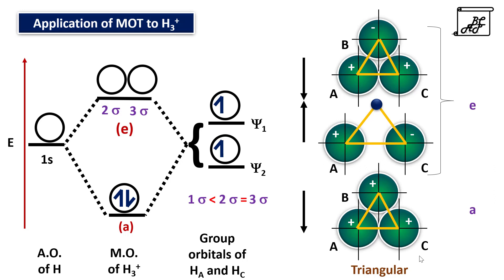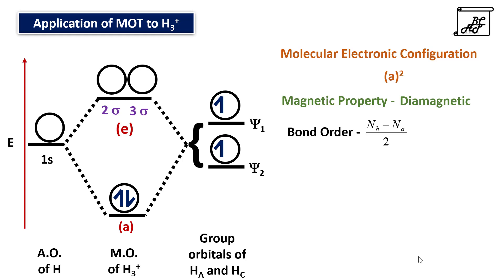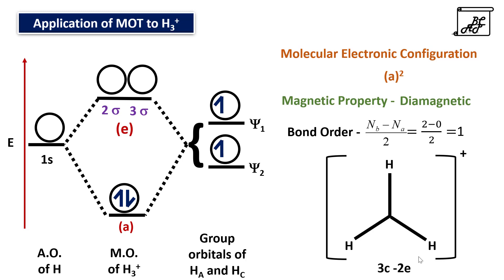Both electrons get occupied in the bonding molecular orbital, same as in linear arrangement. In linear arrangement there are three molecular orbitals: one bonding, one non-bonding, and one anti-bonding. Whereas in triangular arrangement, there is one bonding molecular orbital and two net anti-bonding orbitals. According to molecular orbital theory, the molecular electronic configuration is A squared as both electrons are in the bonding molecular orbital. Magnetic behavior is diamagnetic as there is no unpaired electron, and bond order is calculated as (bonding electrons minus anti-bonding electrons) divided by 2, which equals 1. Thus, according to molecular orbital theory, for extra stability the structure of trihydrogen ion is not linear but a triangular ion with three-center two-electron bonds.